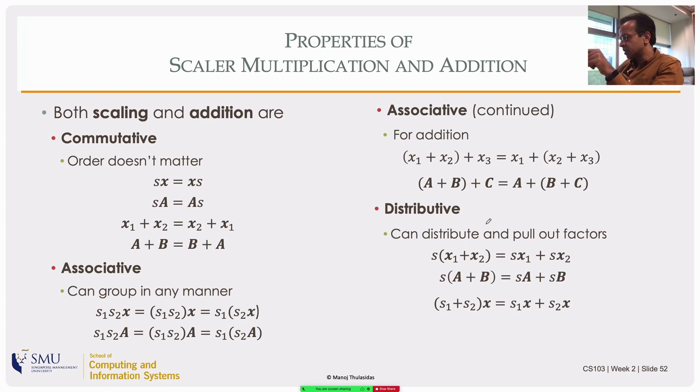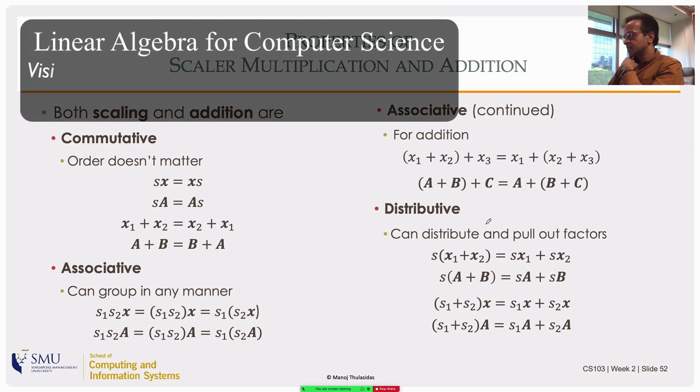You can write the second way of doing it. You can add two scalars, s1 plus s2, the whole thing multiplying a vector is the same as the first scalar s1 multiplying x plus the second one scaling x. Same thing with matrix. All fairly obvious, just saying these things for the sake of completeness.